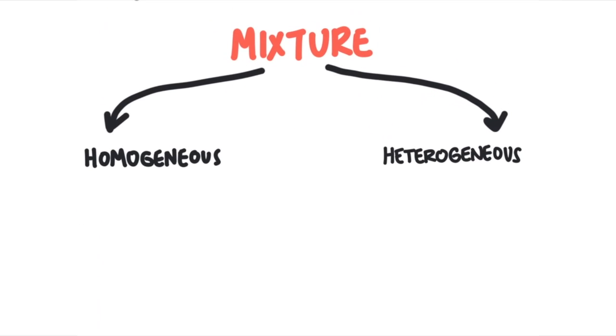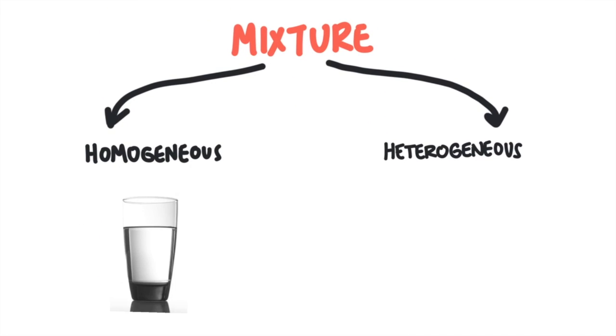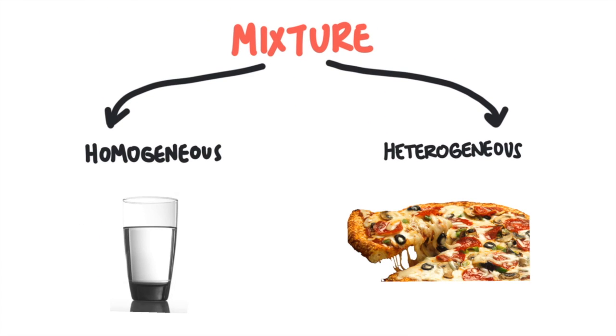There are two types of mixtures. Take a look at this salt water and this pizza. They're both mixtures, yet they look very different. Salt water is a mixture, but I can't see the different parts of the mixture. It looks uniform throughout the mixture. Pizza is a mixture, and I can see the different parts of the mixture. It does not look uniform throughout. A homogeneous mixture is a mixture where I cannot see the different parts of the mixture. A heterogeneous mixture is a mixture where I can see the different parts of a mixture.